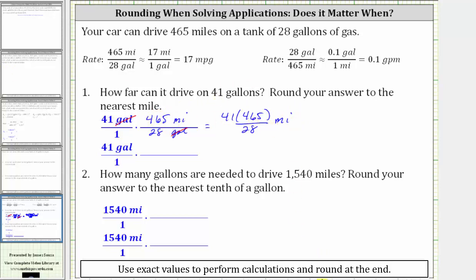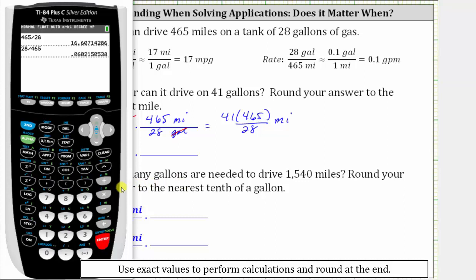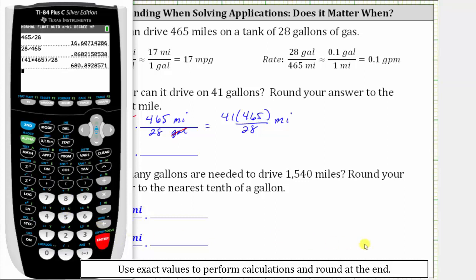Going back to the calculator, we want to evaluate this quotient and then round to the nearest mile. We compute 41 times 465, then divide by 28. Because we have an eight in the tenths place value, we round up to 681 miles.